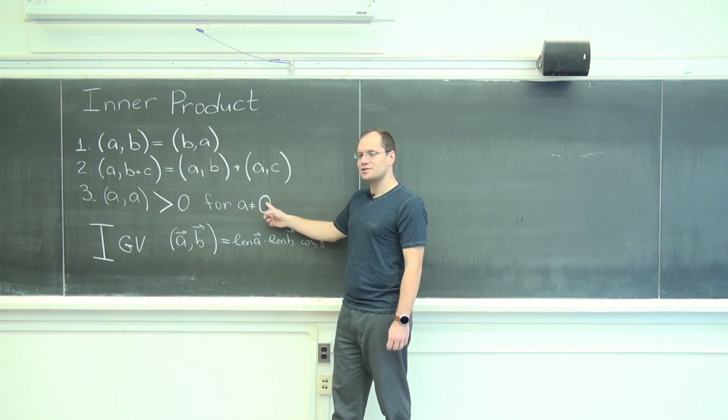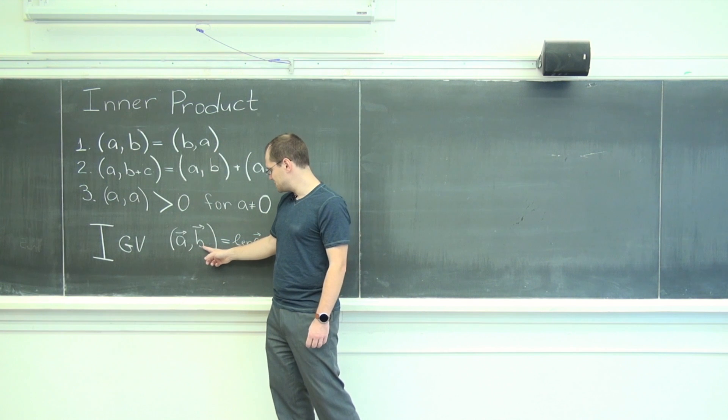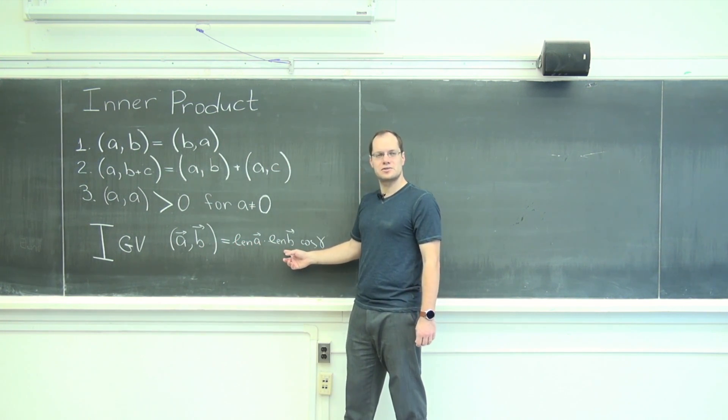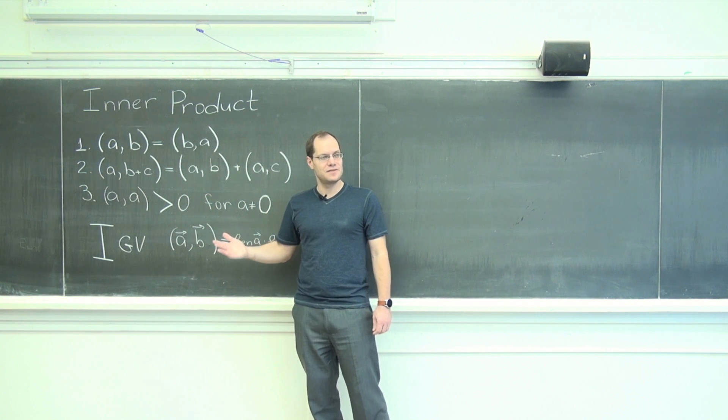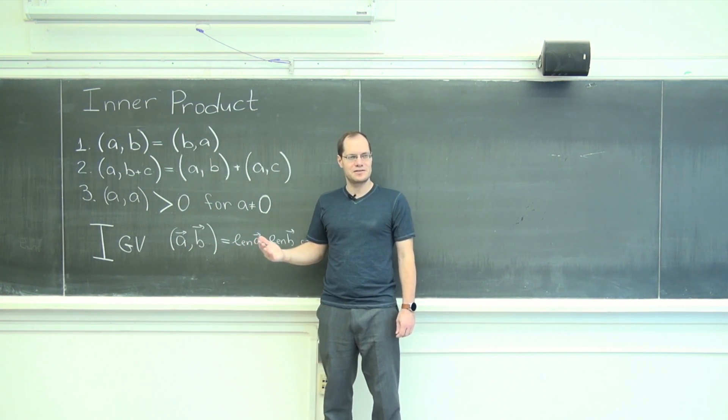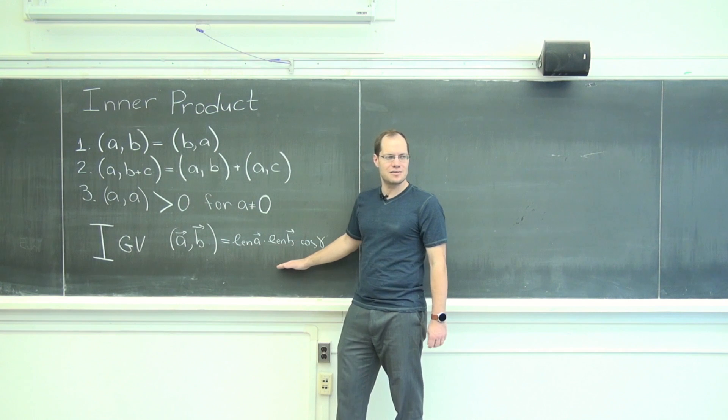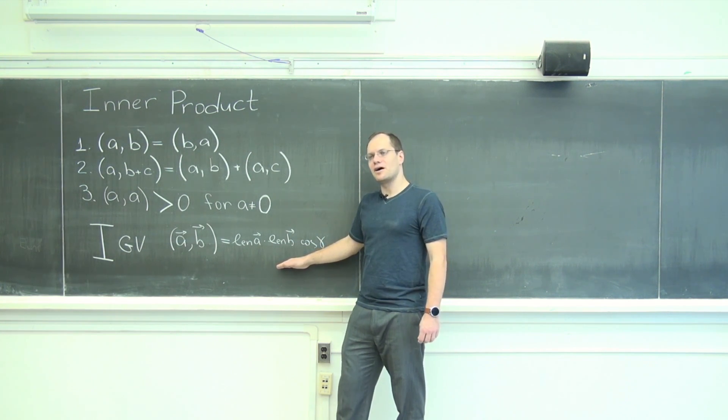In any case, if you take a non-zero vector and you dot it with itself, you just get its length squared because it's cosine of zero. And that's a positive number for all non-zero vectors. So not only is this the dot product, it's also an inner product.